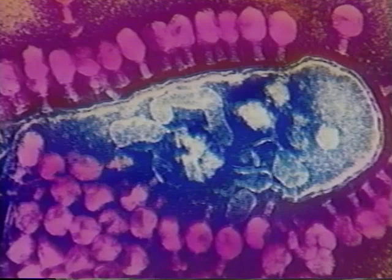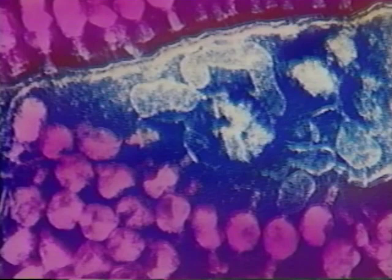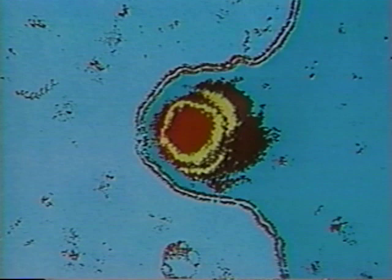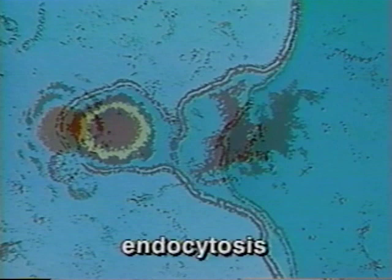Here we see an electron micrograph of a bacterial cell with bacteriophages breaking out. Each of the new viruses can then infect another bacterial cell. There are variations in how different viruses enter, take over, and leave a cell. For example, instead of injecting their genetic material, many viruses enter a cell whole through a process called endocytosis. Once inside, they lose their capsid coat, exposing their DNA or RNA.